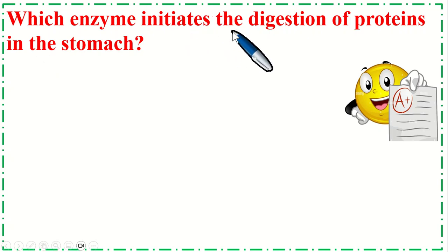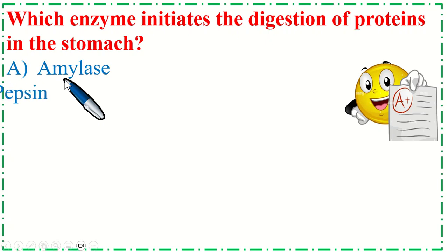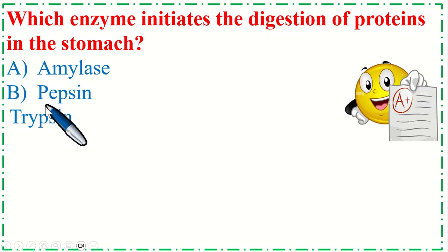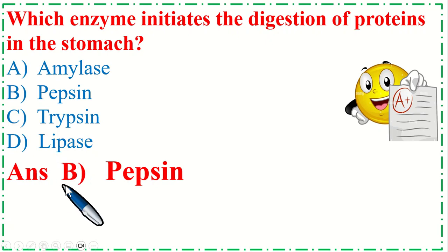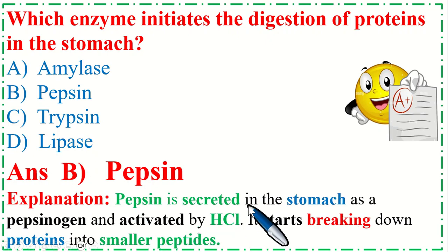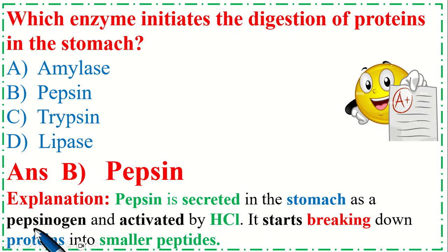Which enzyme initiates the digestion of proteins in the stomach? Option A: Amylase, B: Pepsin, C: Trypsin, and Option D: Lipase. The correct option is B, Pepsin. Pepsin is secreted in the stomach as pepsinogen and activated by HCl. It starts breaking down proteins into smaller peptides.